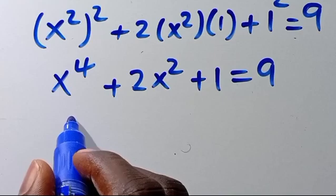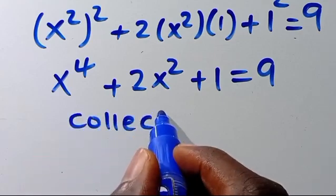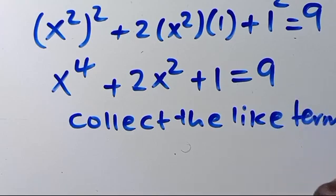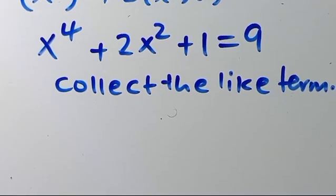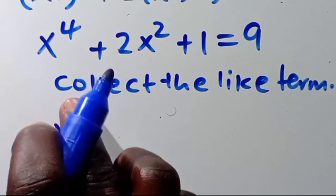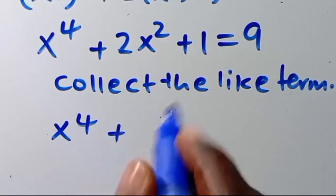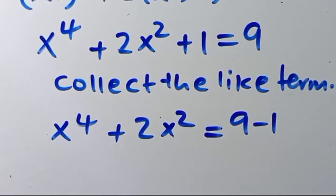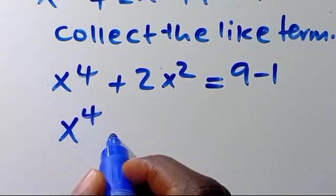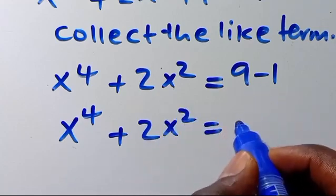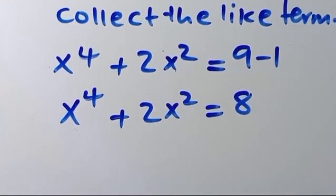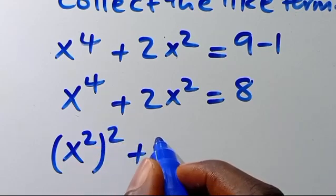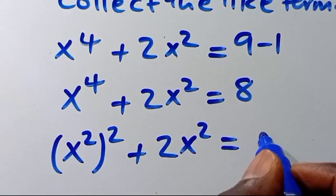Then from here, let's collect the like terms. When we collect the like terms, we are going to have x to the power of 4 plus 2x squared equals 9 minus 1, which is 8. So we can write this as x to the power of 2, squared, plus 2x squared equals 8.